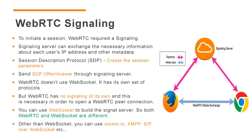We know that to initiate a session, WebRTC requires signaling. A signaling server can exchange the necessary information about each user's IP address and other metadata. Session Description Protocol — SDP — creates the session parameters, and finally we can send SDP offer and answer through the signaling server. Now we understand that WebRTC doesn't use WebSocket — it has its own set of protocols. But WebRTC has no signaling of its own, and signaling is necessary in order to open a WebRTC peer connection. So that is why we can use WebSocket in WebRTC.